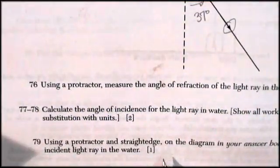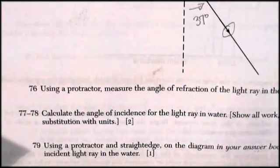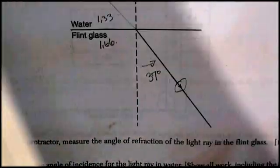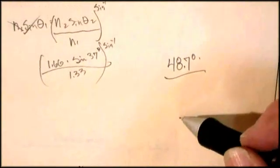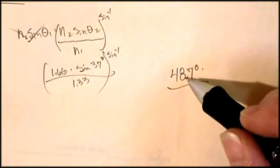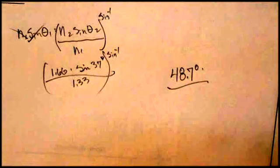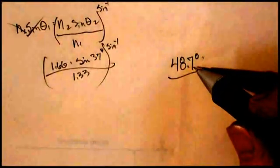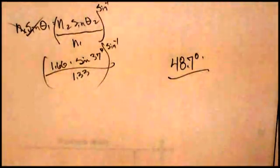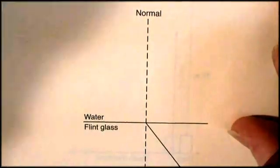Question 79. Using a protractor and a straightedge on the diagram in your answer booklet, draw the path of the incident light ray in the water. Okay. So here's where it's a real pain to grade these things. Let me tell you. Because what your teacher has to do is, no matter what the answer is you got for this, you get 100 degrees. If you then draw it properly, you get the point for 79. You miss it here because you screwed up your math or whatever. But if you can draw that angle, then you get one more point.